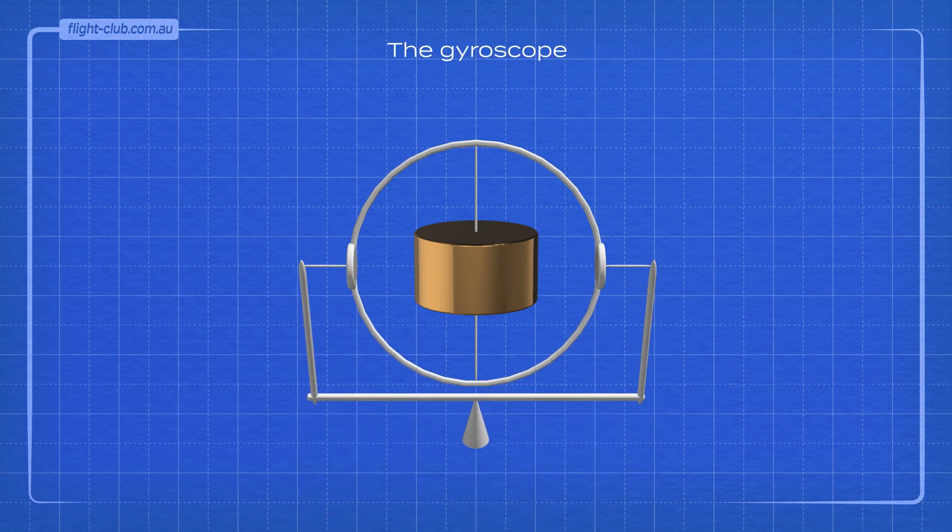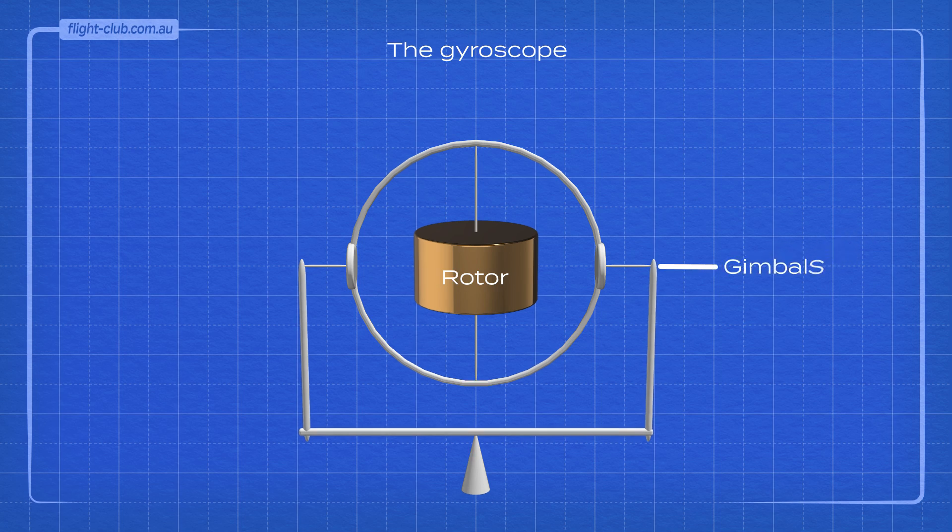The disc is called the rotor. The mounting devices are called gimbals. A gyroscope may have one or two gimbals.